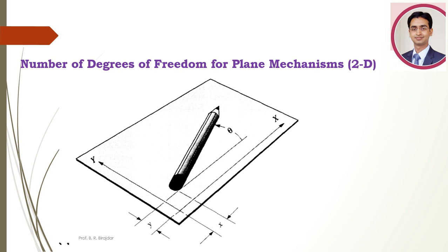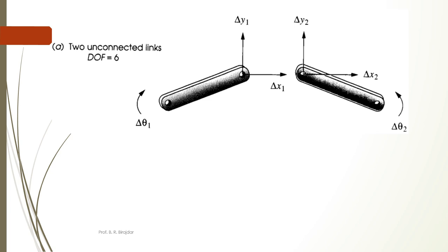Now consider two links — this is link one and this is link two. As we have already seen, each link has three degrees of freedom: in the X direction, Y direction, and its angle. So three degrees of freedom for one link, and three degrees of freedom for the other link — total six degrees of freedom when the links are not connected.